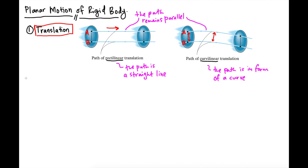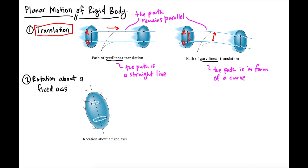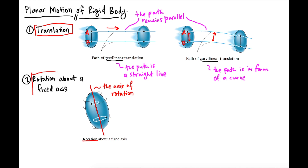The second type of rigid body planar motion is called rotation about a fixed axis. The rigid body now rotates, and it is called rotation about a fixed axis because the rigid body is rotating about an axis — this is the axis of rotation. So this rigid body basically rotates about this axis of rotation, which is this straight line here. That is the second type of rigid body planar motion.